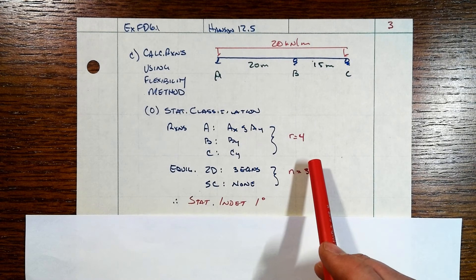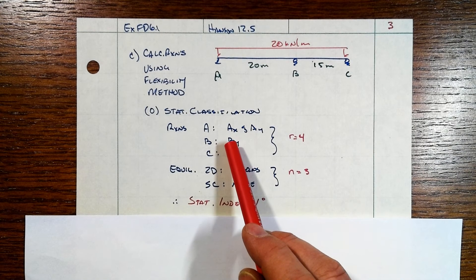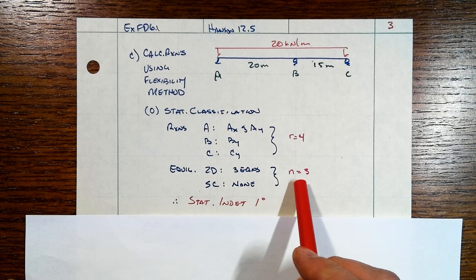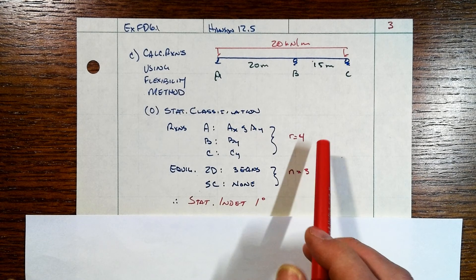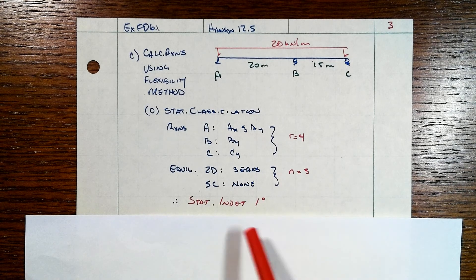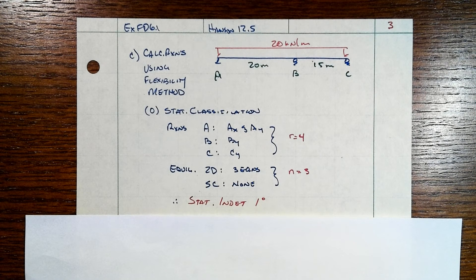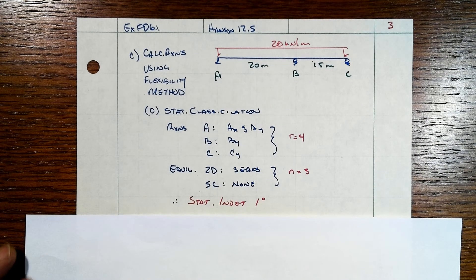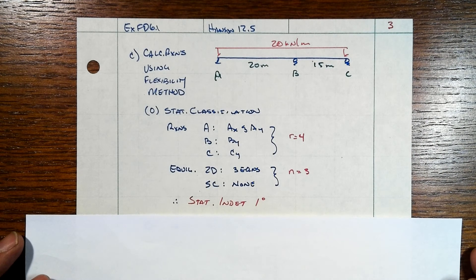So, if you want to play that game that, hey, I know A_X equals zero, that's fine. But you've just taken your available equations of equilibrium down by one. So, then that would become three compared to two. You're still statically indeterminate to the first degree. You cannot find all of these reaction components using only the static equations of equilibrium.